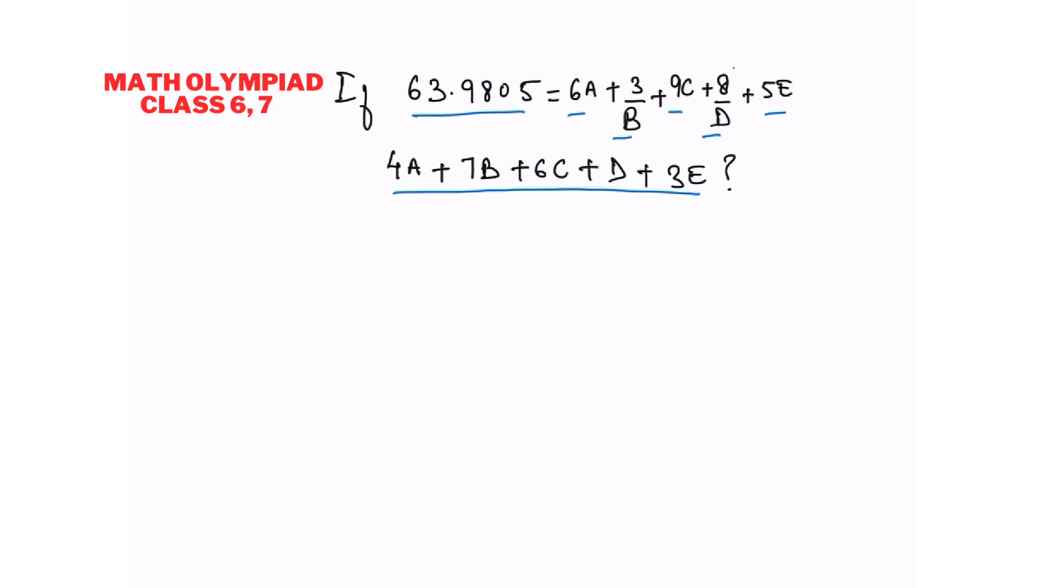So let's see, this can be written as 6 into 10 plus 3 into 1 plus 9 divided by 10 plus 8 divided by 100 plus 5 divided by 10,000.